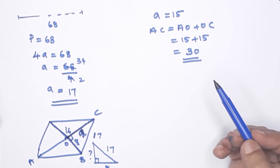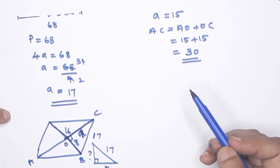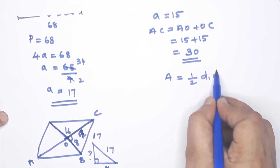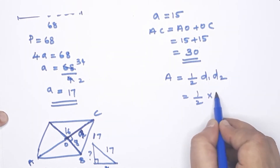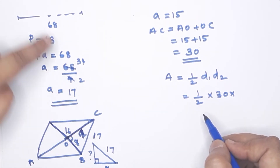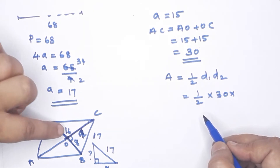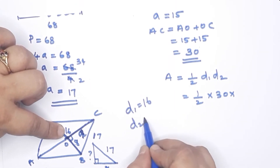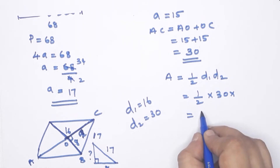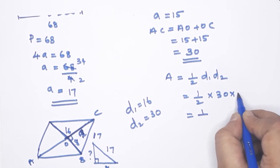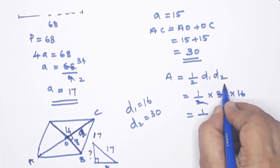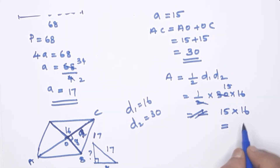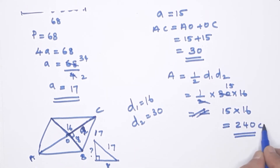Next question: what is the area of the ground bounded by the rope? The formula for area is half D1 × D2. D1 = 16, D2 = 30. Area = ½ × 16 × 30 = 15 × 16 = 240 square centimeters.